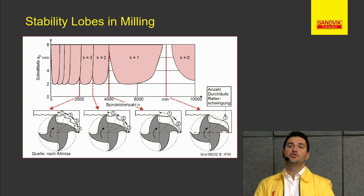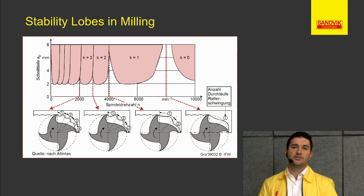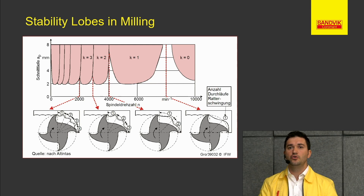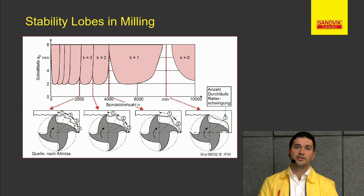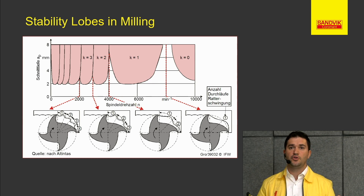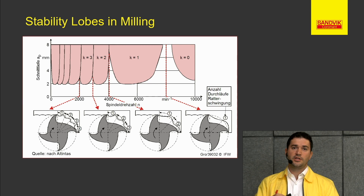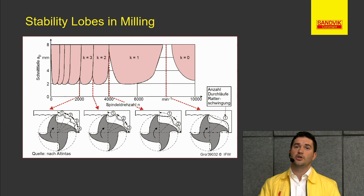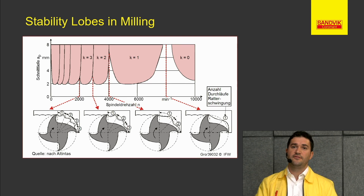But if 8,000 RPM is too high for your material, then you will try to match two to one — two vibrations to one — which is at 4,000 RPM. In between, there is a large range where you will not be in safe operation. Your depth of cut is limited to two millimeters in that case, but at 4,000 RPM you can go up to seven millimeters.